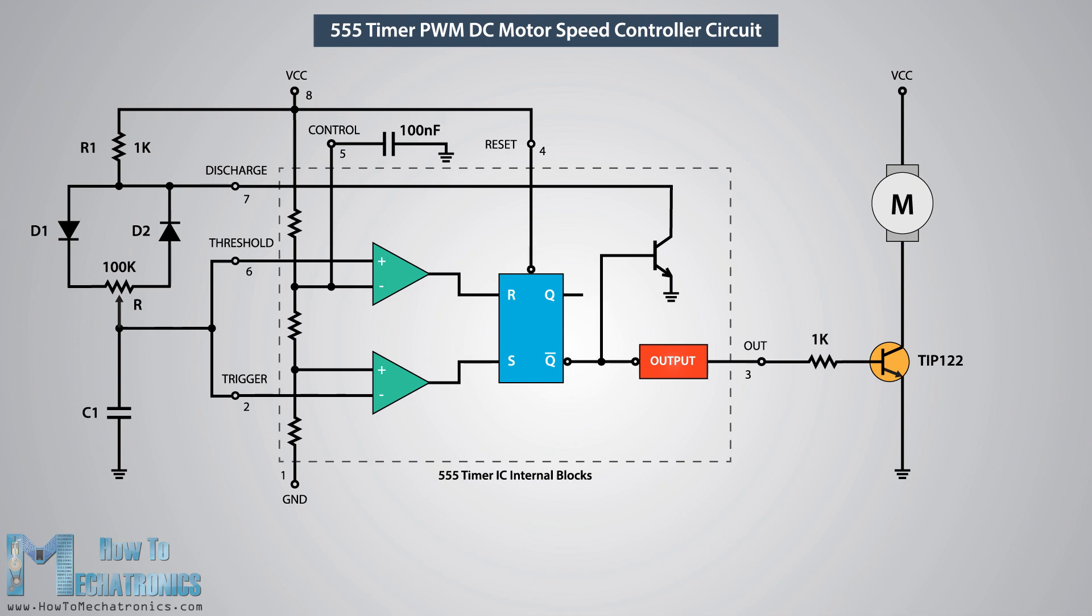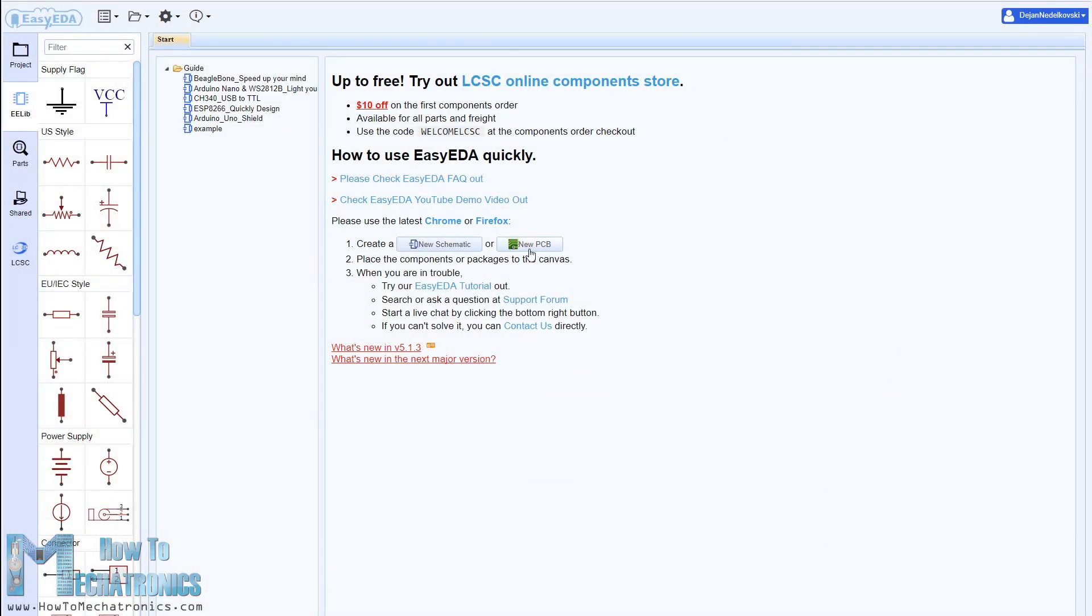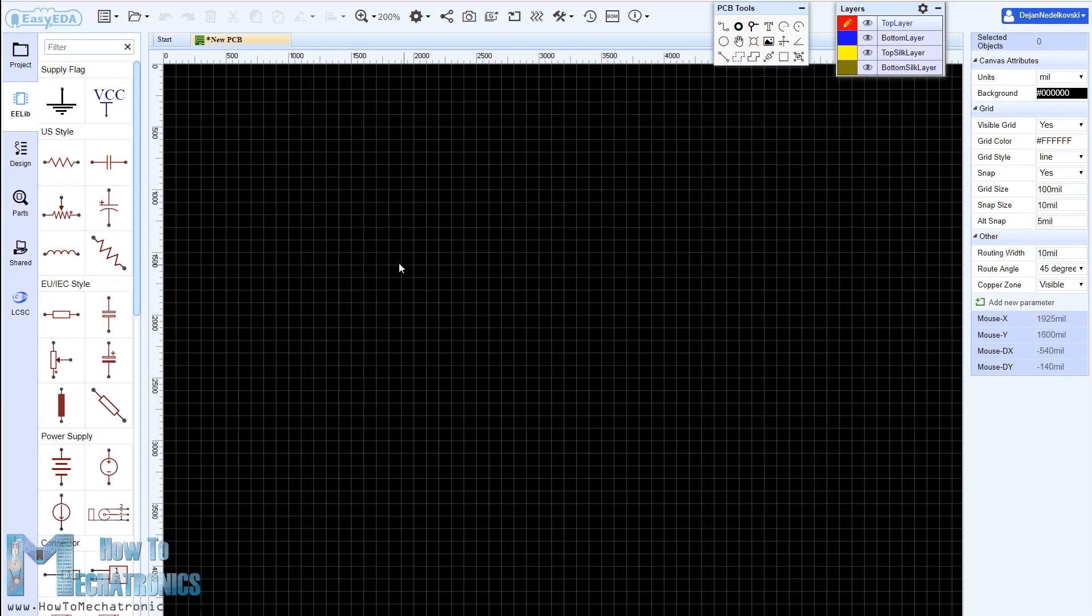For preventing any voltage spikes produced by the motor we need to use a flyback diode which is connected in parallel with the motor. Now we can move on and design the custom PCB for this circuit.